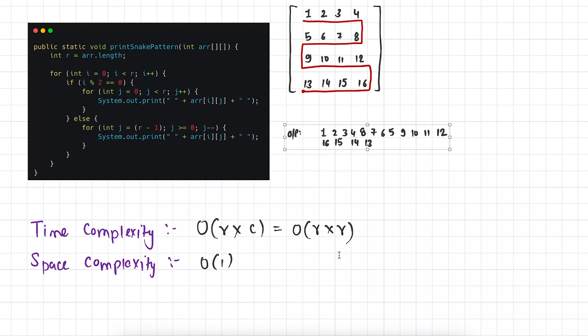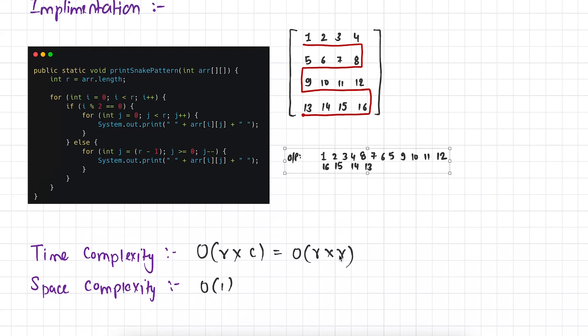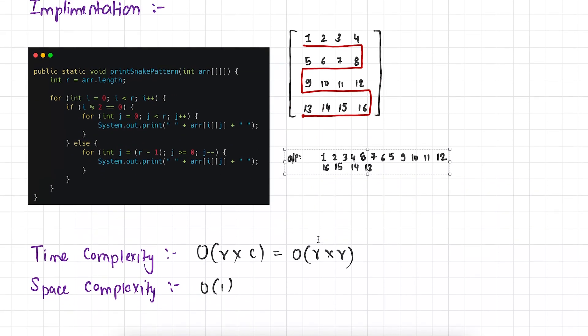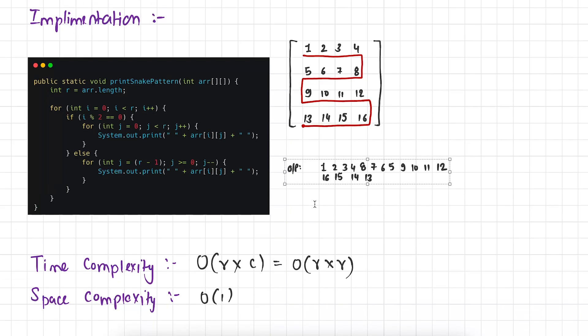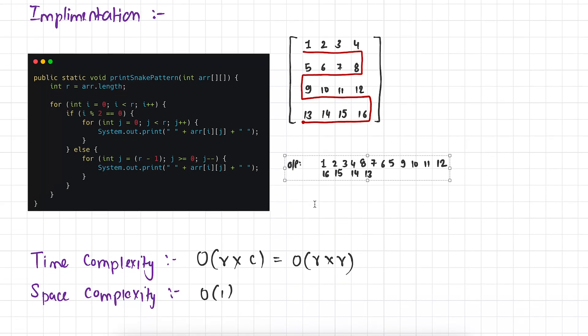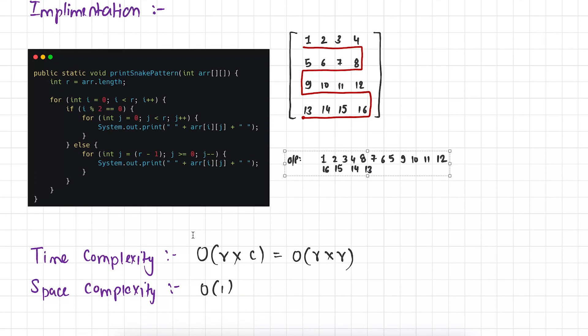Moving on to the most important part of this problem that is finding the time and the space complexity. Now here how many times loop is running. And as we can see the loop is exactly running number of times that is equal to number of elements. And how many elements are there? We can determine number of elements with the help of count of rows and columns. There are 4 rows and 4 columns. So 4 times 4 is 16. So this means the loop runs 16 times. So we can say that the time complexity of this function is big O of r into c where r is the count of rows and c is the count of columns.